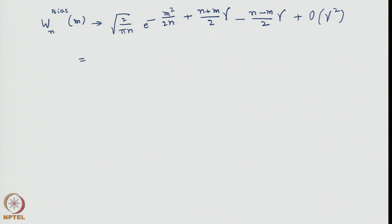On simplifying, this becomes root of 2 by pi n times e to the power minus m squared by 2n, and the n by 2 minus n by 2 gamma terms cancel. The remaining terms give m by 2 gamma plus m by 2 gamma, which simplifies to simply m gamma, so we get plus m gamma in the exponent.